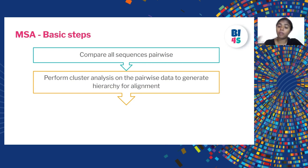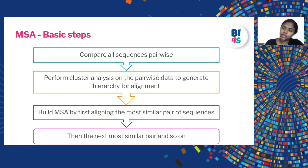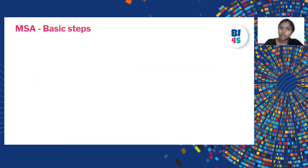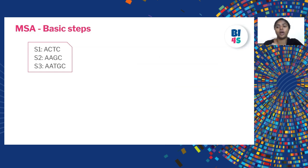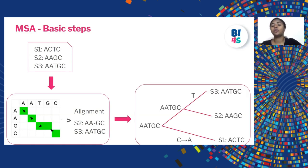Out of all the possible combinations of pairwise sequence alignment, we perform a cluster analysis on the pairwise data to generate the hierarchy of the alignment, and then we build the MSA by first aligning the most similar pair of sequences, then the next most similar pair, and so on. Here is a basic example: we have three sequences — sequence one, sequence two, and sequence three — and we build pairwise sequence alignments for all possible combinations, such as between sequence two and sequence three.